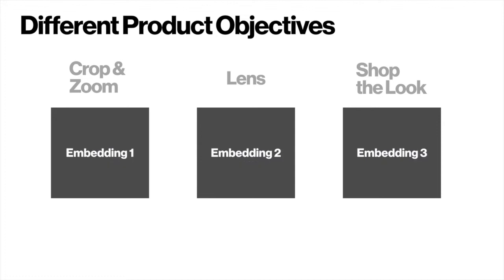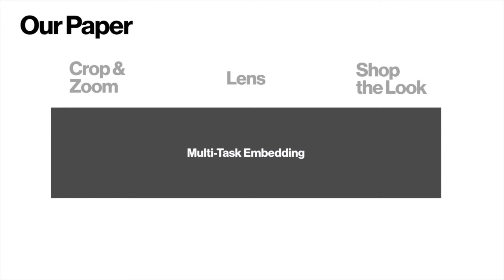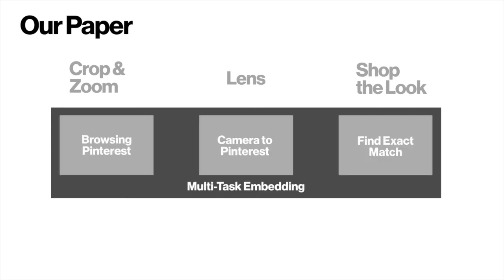Previously, each product had its own model trained specifically for that product's objective. Now, browsing within Pinterest, camera to Pinterest matching, and finding exact matches are all handled within one unified embedding and one metric space.